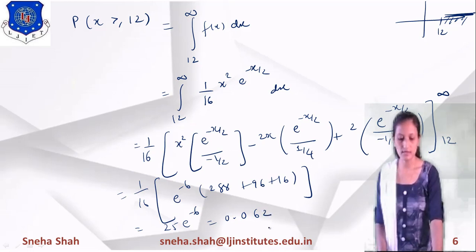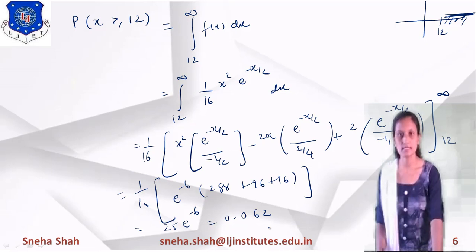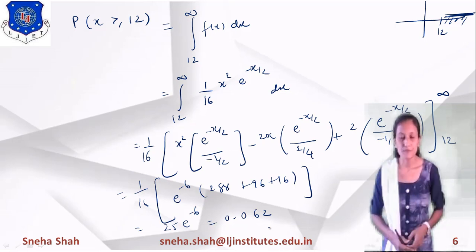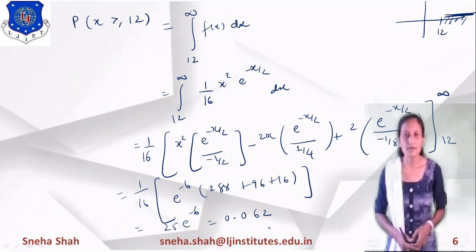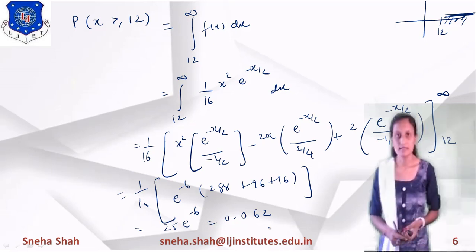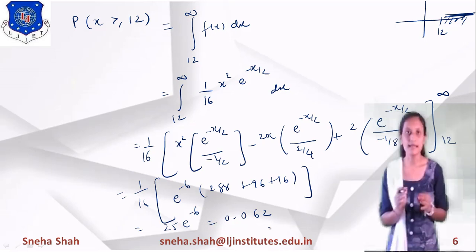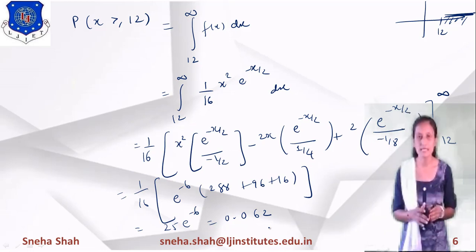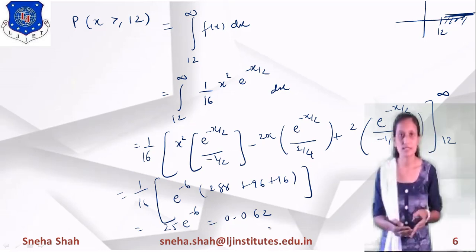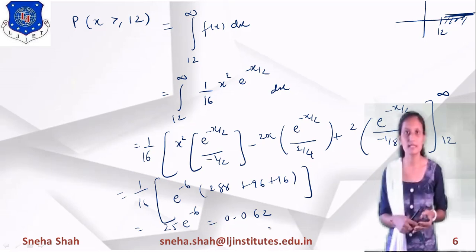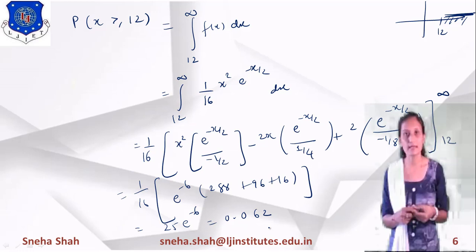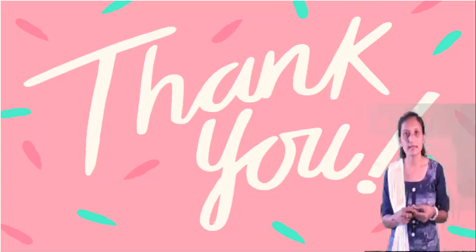This way we can solve examples of probability for a random variable x over any given range, using different distributions like gamma distribution, exponential distribution, binomial distribution, and Poisson distribution. In this chapter we have covered all these types of distributions. From the next session I will explain applied statistics. Thank you so much.